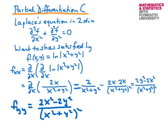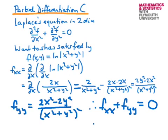Now we have both terms and we can compute their sum. Adding f_xx and f_yy, they share the same denominator (x² + y²)², and in the numerator we get (2y² − 2x²) + (2x² − 2y²). The x² terms cancel and the y² terms cancel, giving exactly 0 as required. So we have verified that f(x, y) = log(x² + y²) satisfies Laplace's equation. Next we'll look at the wave equation.